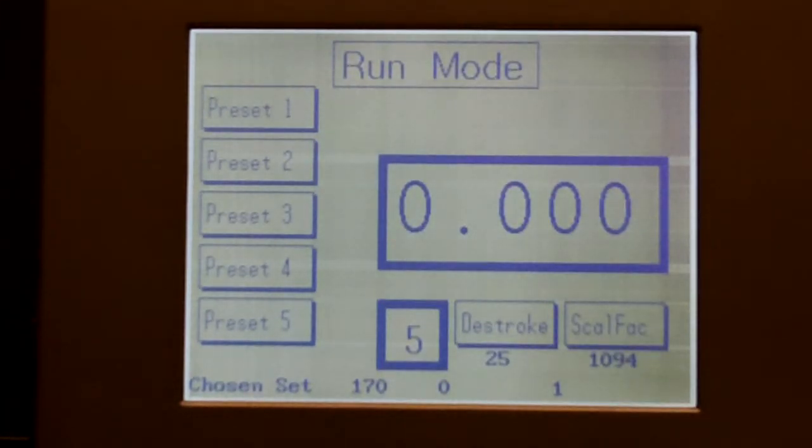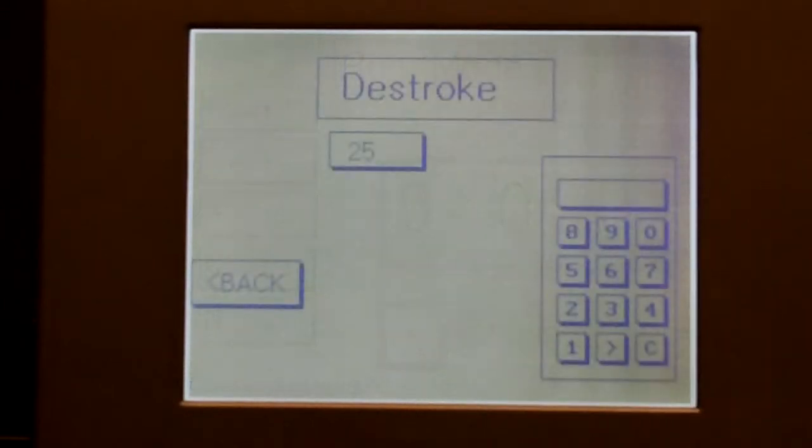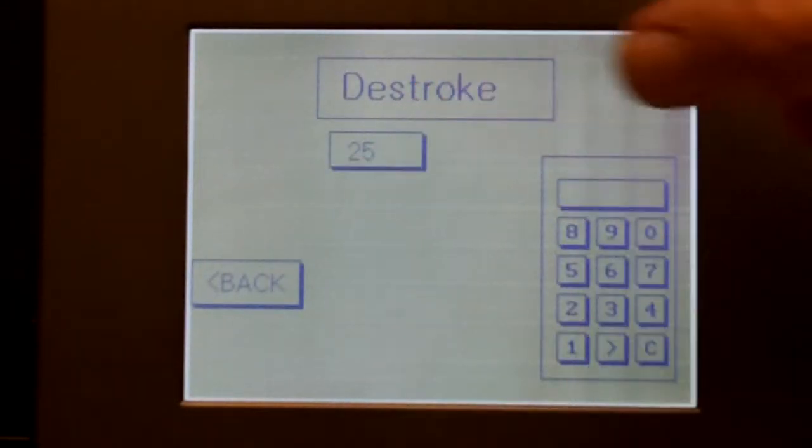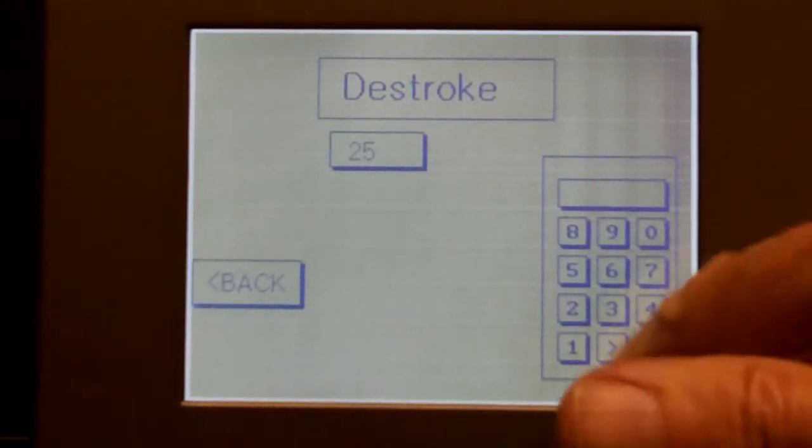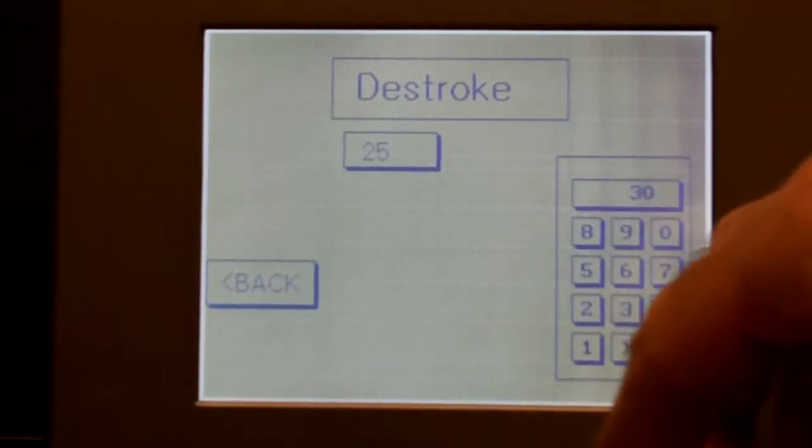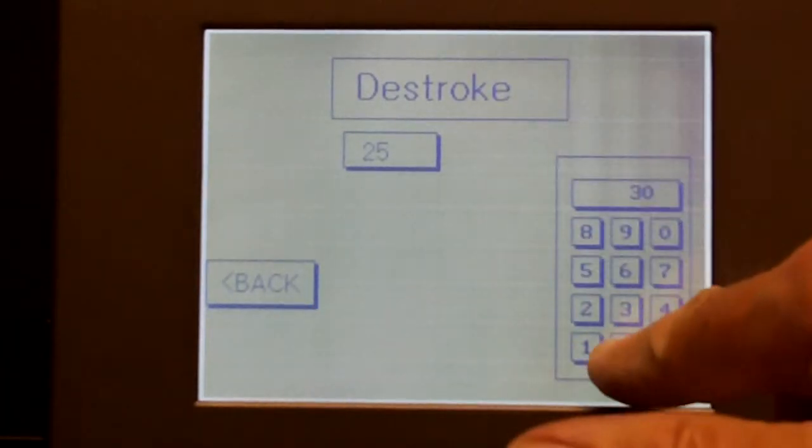Similarly, the other presets, the D-stroke value, or the slowdown value can be entered in the same way. We show the current value and the new value is just entered the same way. Press the Enter key and then press the Back button.